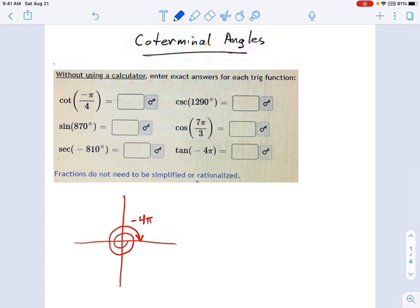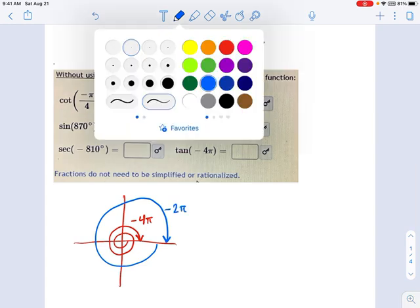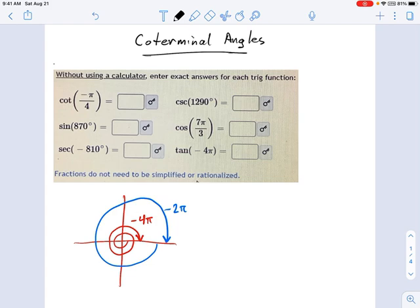Now what's that equivalent to? Well, I could draw another angle here, which only goes around the unit circle once. That's negative 2π. And these are equivalent angles as far as the unit circle is concerned because they share the same terminal side right here, the terminal side that I'm drawing.